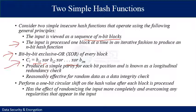This produces a simple parity for each bit position, known as a longitudinal redundancy check. It is reasonably effective for random data integrity checking — each n-bit hash value is equally likely, so the probability that a data error results in an unchanged hash value equals 2 raised to power −n. However, with more predictably formatted data the function is less effective. For example, in most normal text files the high-order bit of each octet is always zero, so if a 128-bit hash is used, the effectiveness drops from 2^−128 to 2^−112.